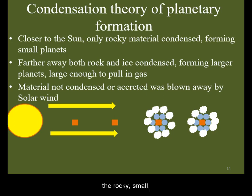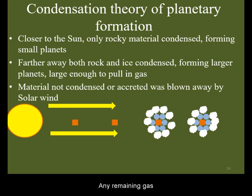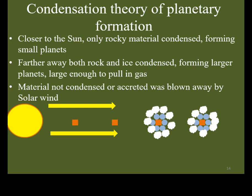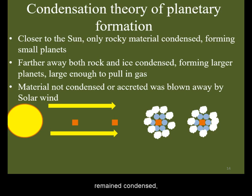This is where the rocky, small, terrestrial planets formed. Any remaining gas was then swept away by the solar wind. The protoplanets remained condensed, stuck together, and formed much larger planetary cores.